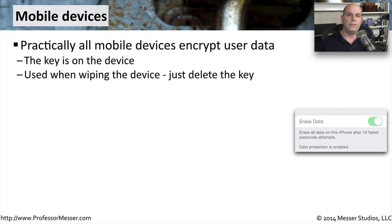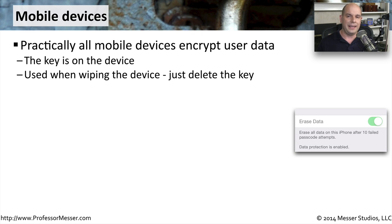We're all walking around with mobile phones and tablets, and these devices obviously have data stored on them that is also a concern. We want to be sure that we're encrypting that data as well. Fortunately, almost all of the operating systems on mobile devices already implement some form of encryption. It may not be all of the data on that mobile device, but some of the most important and private information is encrypted by default. In fact, if somebody performs a wipe of data on these mobile devices, what they're really doing is deleting the key — and once the key is deleted, none of the data on your device will be accessible.